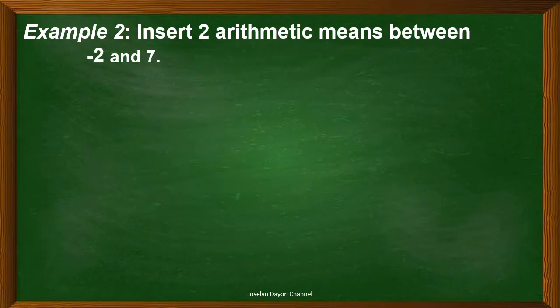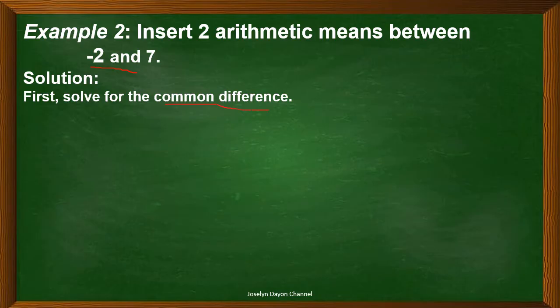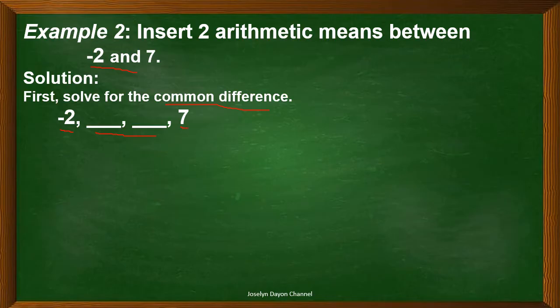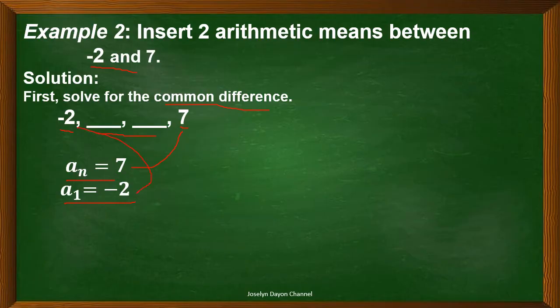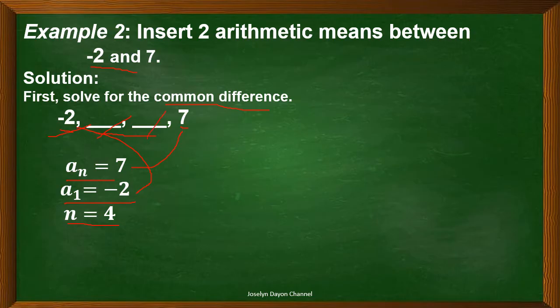Now let's consider the second example: insert two arithmetic means between negative 2 and 7. We have to solve first for the common difference. Negative 2 is the first term, the two blanks are the two arithmetic means we are going to insert, and 7 is the last term. So a sub n equals 7, a sub 1 equals negative 2, and n equals 4, because we have 4 terms in all.